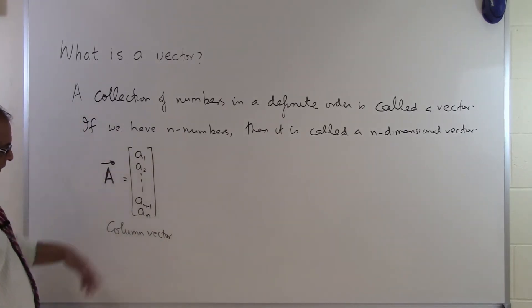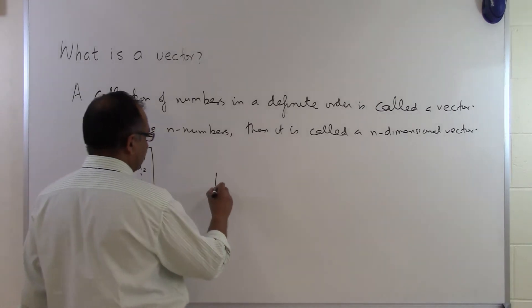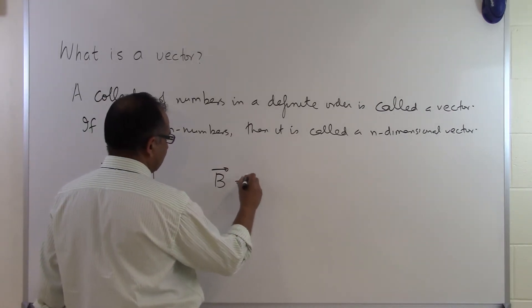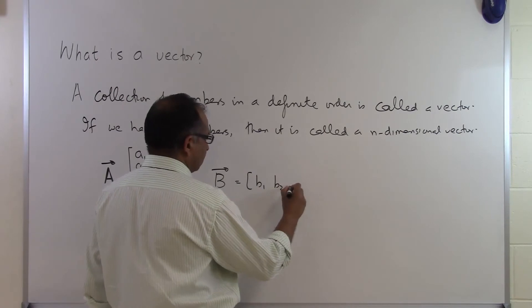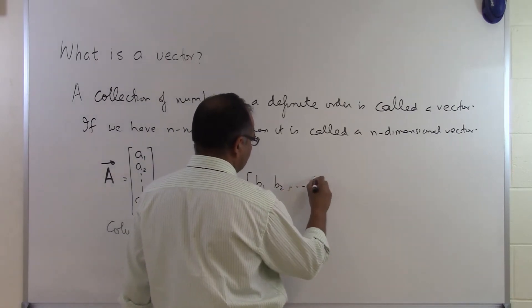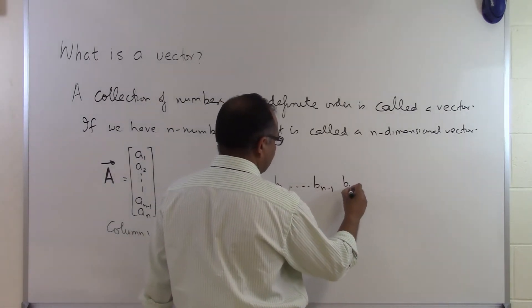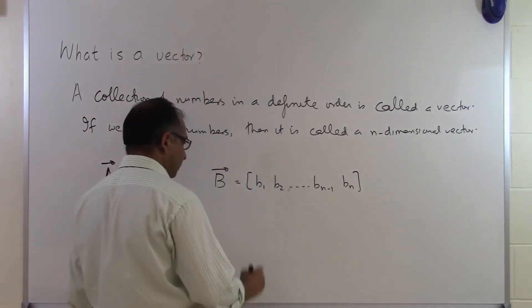You can write these elements in a row also. So if they are given in a row, let's suppose b equals b1, b2, all the way up to b sub n minus 1, b sub n. Then this is a row vector.